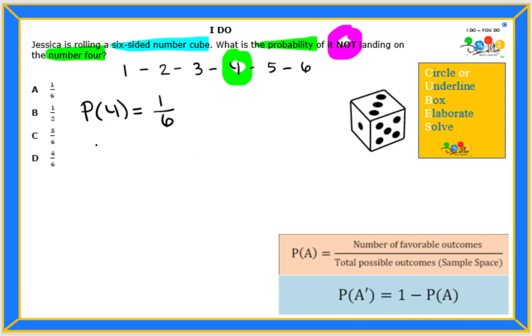So the probability of the complement of four is everything else. And so we could do one minus one over six. So you see how this is going to give us the complement.